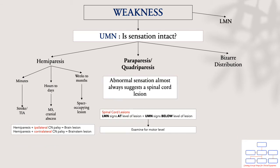If you have bilateral involvement — paraparesis or quadriplegia — ask yourself whether sensation is affected. Abnormal sensation would almost always suggest a spinal cord lesion. With spinal cord lesions, examine for the motor level, because you will find lower motor neuron signs at the level of the lesion and upper motor neuron signs below the level. Examining the motor level in detail will allow you to locate where the lesion lies, or you can request an MRI spine.